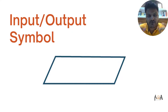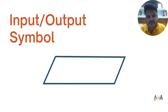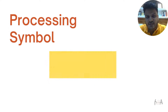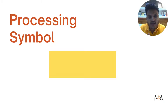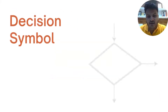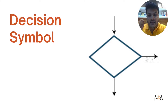This parallelogram, or tilted rectangle, is the symbol for representing any input or output. For example, in an algorithm we want to take input from any user and later show the output, so we use this symbol to represent any input or output of any process. The next one is the processing symbol — basically, if we take data from the user and it goes through processing before giving an output, we use the rectangle symbol to show the processing of any data or document.